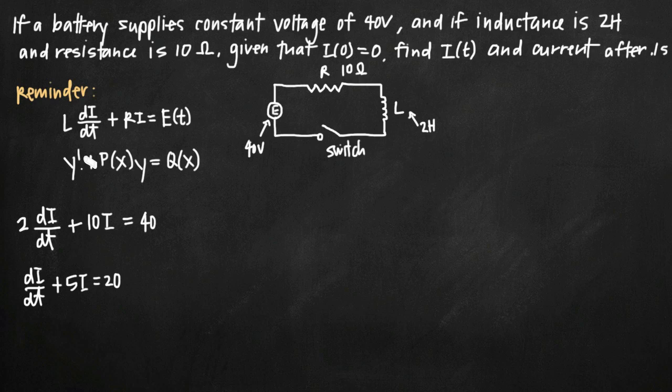Once we get to this point where we essentially have this y prime, or in our case, di over dt term isolated and on its own, we need to multiply through by the integrating factor. And remember that the integrating factor is e to the integral of p(x) dx, where p(x) is taken directly from our linear differential equation here. So we need to find our integrating factor.